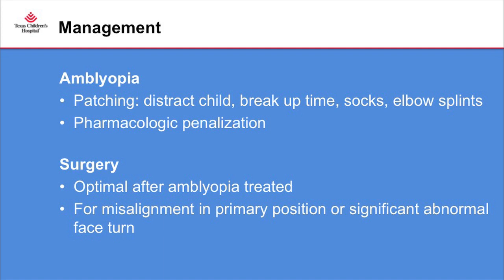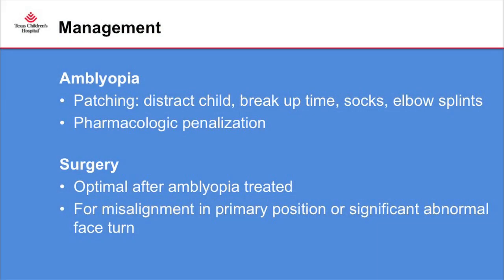Parents often ask why we can't just do surgery. It is really important to optimize vision before surgery. First, surgical outcomes are better if the child sees better. Second, part of the reason we do surgery is to promote binocular fusion — if we patch after surgery to treat amblyopia, we're interrupting the fusion we've created, and that can cause strabismus to decompensate. We have to improve the amblyopia first. Indications for surgical management are misalignment in primary position or a significant abnormal head turn or tilt.